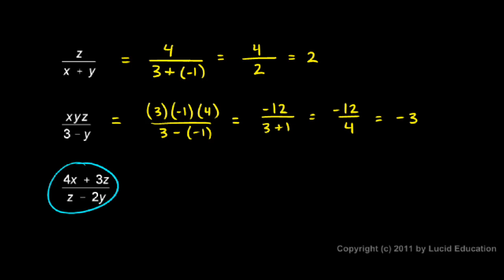And the last one: 4x plus 3z over z minus 2y. Let's rewrite it. 4x is 4 times 3 plus 3z, which is 3 times 4, because z is 4. And that's over z, which is 4, minus 2y. And y is negative 1, so 2 times y becomes 2 times negative 1. Now, I wouldn't expect you to do this in your head. I really encourage you to write out the intermediate steps, getting simpler each time.